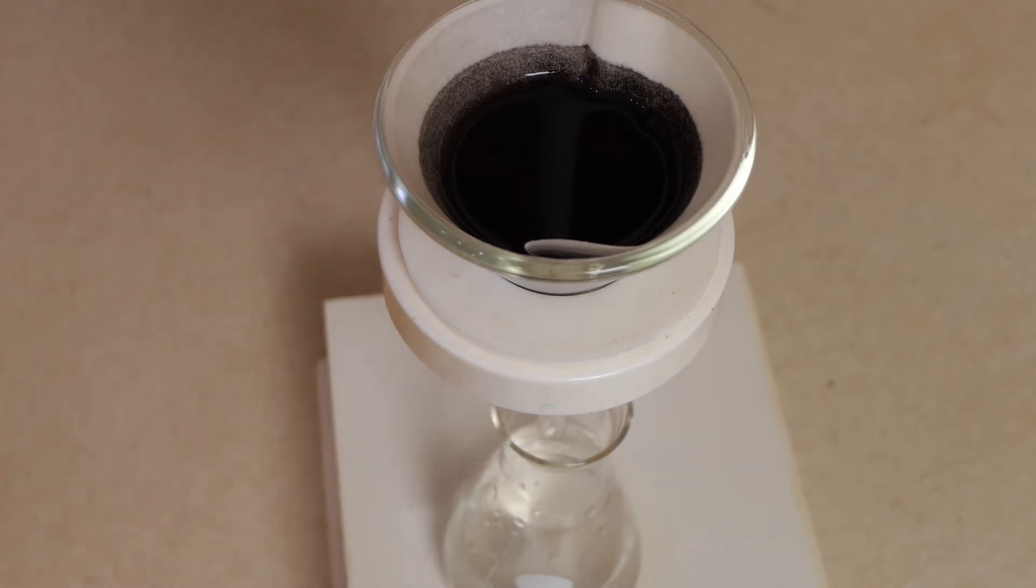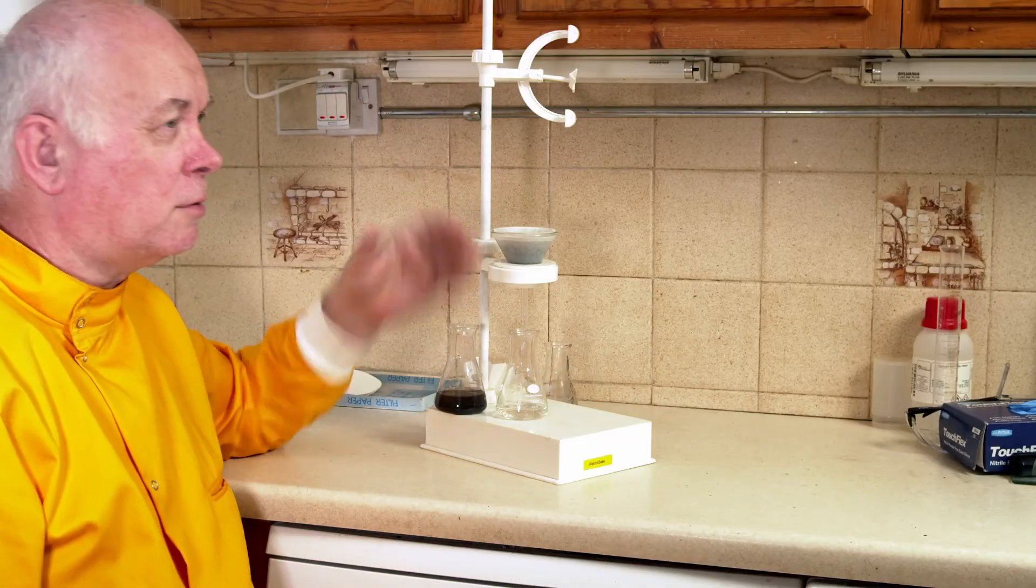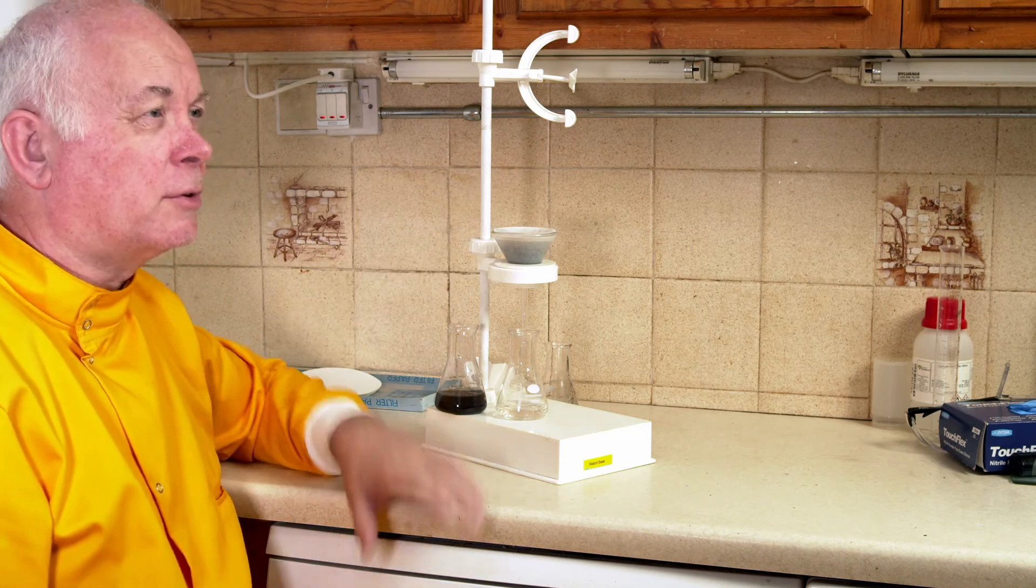In fact in this experiment it's the manganese dioxide I want to recover because it's poisonous and we don't really want to shove it down the sink and it's a catalyst. There's nothing wrong with it, it's just been used once so by filtering it we can put it on the filter paper then I can dry the filter paper and we can recover most of that back and use it again and again and again.